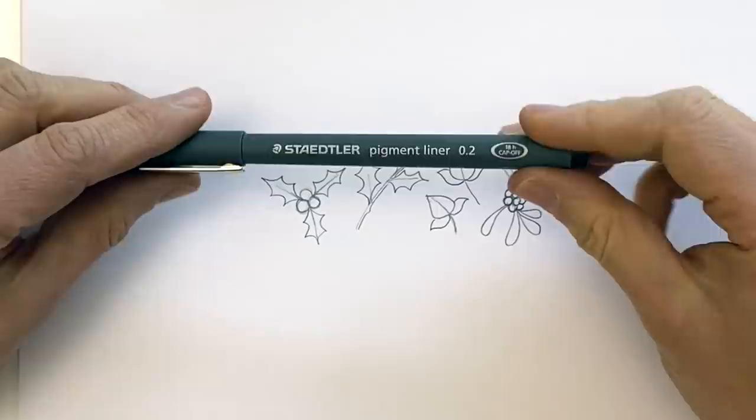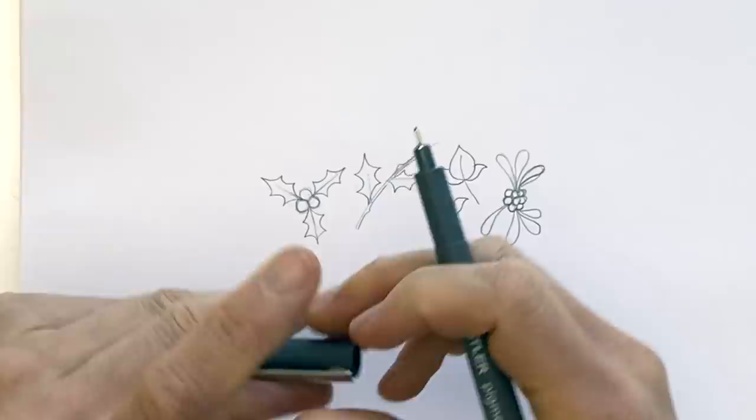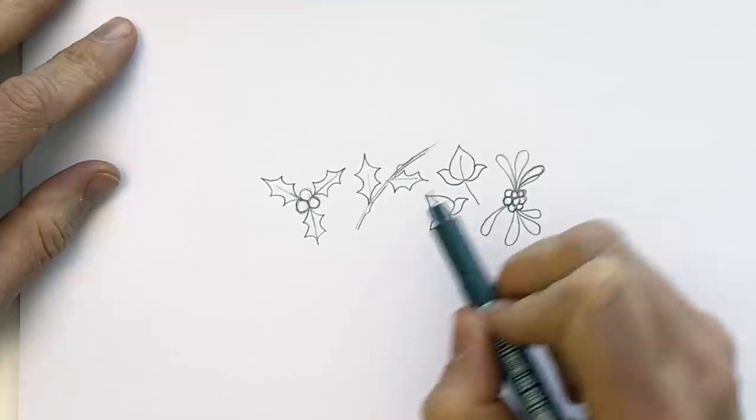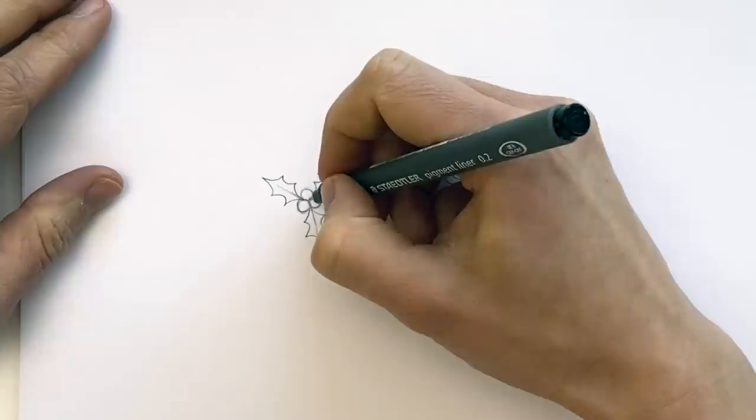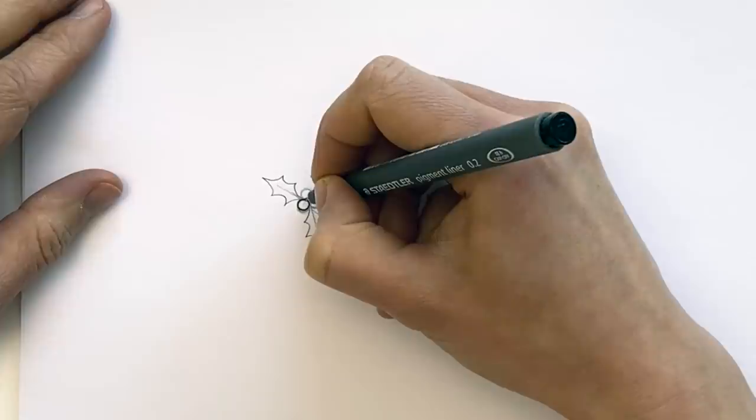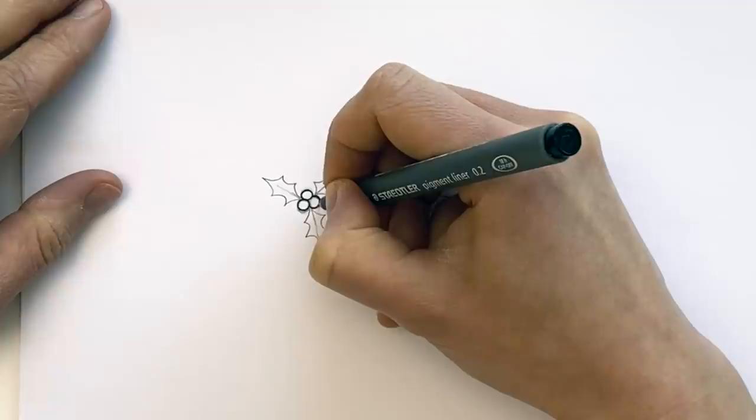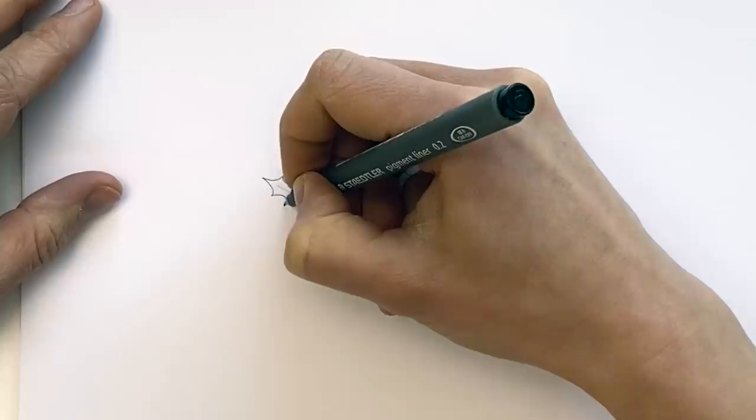So I'm just going to grab my 0.2 pigment liner, fave pen ever, and we're going to go over the pencil lines. So as you'll know, if you've done inky art school with me before, or if you've got the book How to Draw Inky Wonderlands, I draw in pencil first, and then I redraw in ink because I am not confident enough most of the time to draw in ink first. I like to make changes. So just draw in pencil first. I work it all out and then go over in ink.